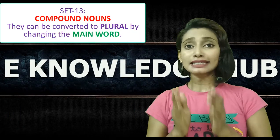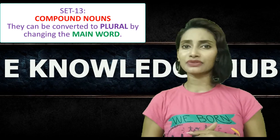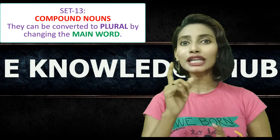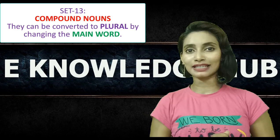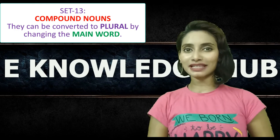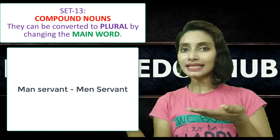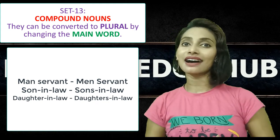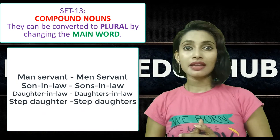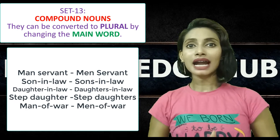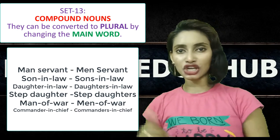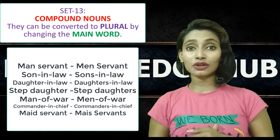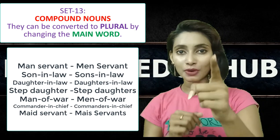Now let's see set 13. Set 13 is all about compound nouns. As we have already discussed, compound nouns can be pluralized, but only the main word of the compound noun should be pluralized — not always at the end of the word. For example: man-servant, men-servants; son-in-law, sons-in-law; daughter-in-law, daughters-in-law; step-daughter, step-daughters; man-of-war, men-of-war; commander-in-chief, commanders-in-chief; maid-servant, maid-servants. Be careful with compound nouns — pluralize only the main word.